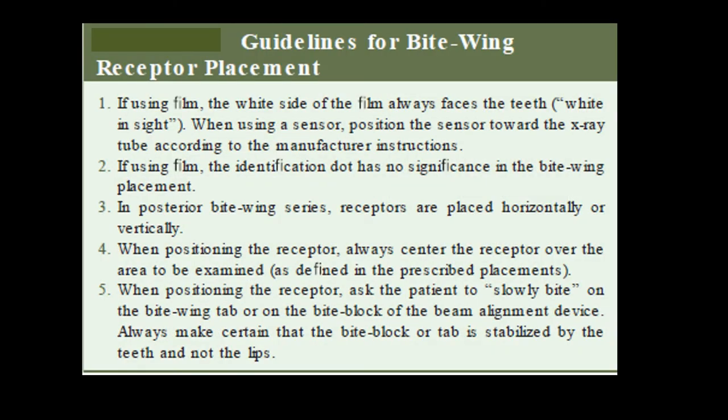Guidelines for bitwing receptor placement: if using film, the white side always faces the teeth. When using a sensor, the position towards the x-ray tube should follow manufacturer instructions. The identification dot has no significance in bitwing placement, whereas in IOPA images the dot should always be towards the occlusal surface — it does not have any role in bitwing technique.